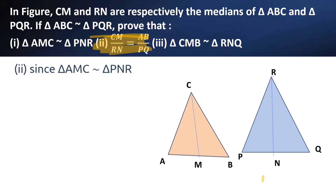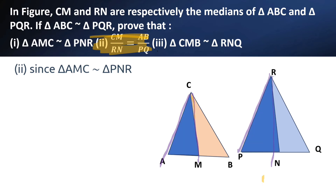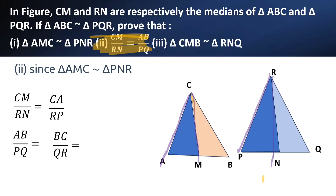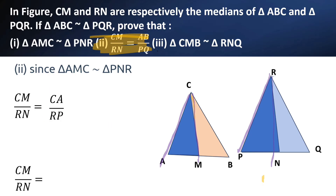Now let us solve the second question. We have already proved that triangle AMC is similar to triangle PNR. So we can write the corresponding sides in the same ratio: CM by RN is equal to AC by RP. But we know AB by PQ is equal to BC by QR is equal to CA by RP. Since CA by RP is common to both, we can say CM by RN is equal to AB by PQ. Hence proved.